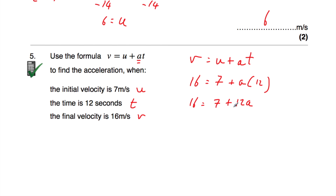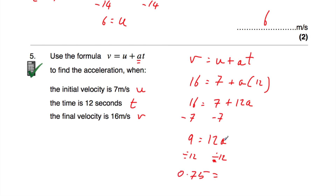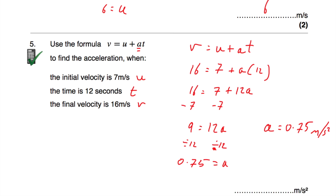And now we want to solve this equation, so let's take away 7 from both sides. 16 take away 7 is equal to 9, and on the right-hand side we're just left with 12a. Now we divide by 12 on both sides to find what a is. 9 divided by 12 is equal to 0.75, or three quarters. So a, the acceleration, is 0.75 metres per second squared.